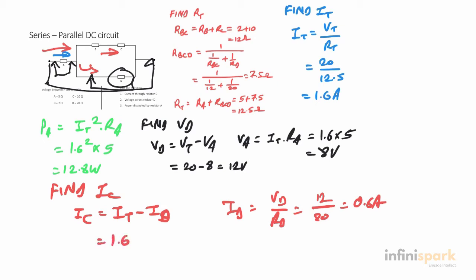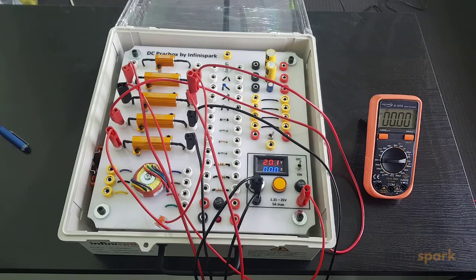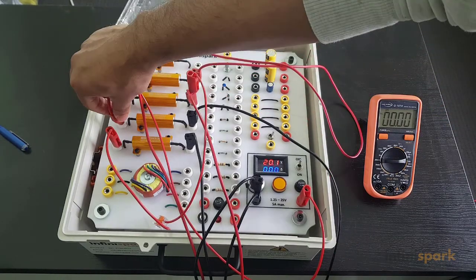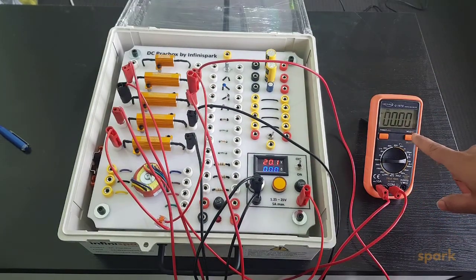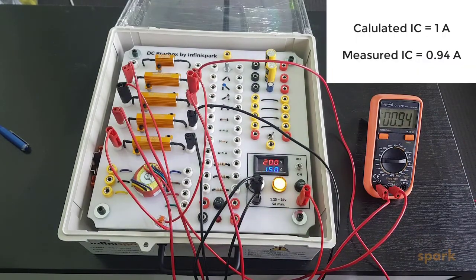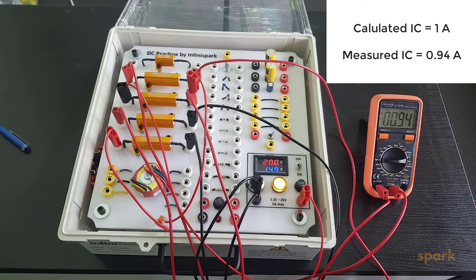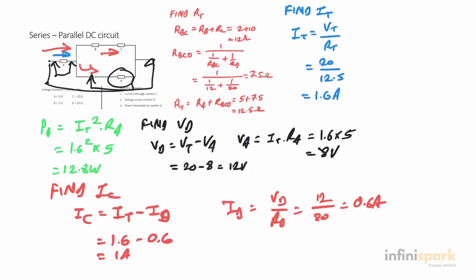Since the total current is 1.6 amps, subtracting 0.6 gives us 1 amp. Measuring the current through resistor C, we see IC is 0.94 amps, which should have been 1 amp according to our calculations, but 0.94 is quite close. Now we've found all our answers.